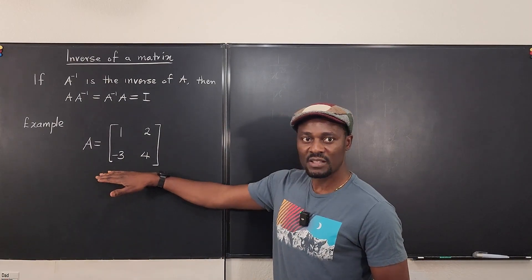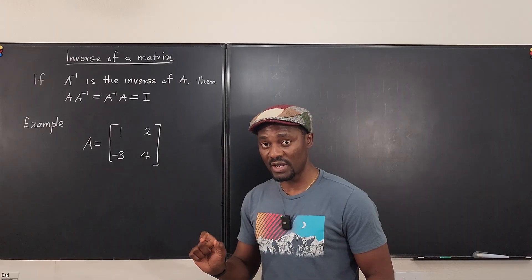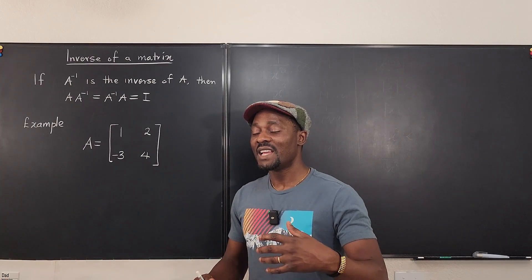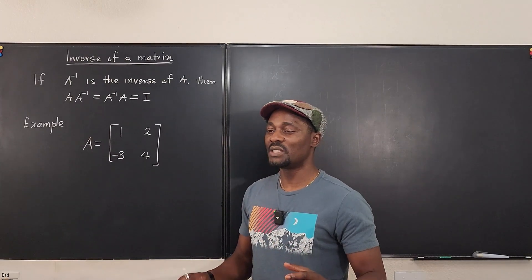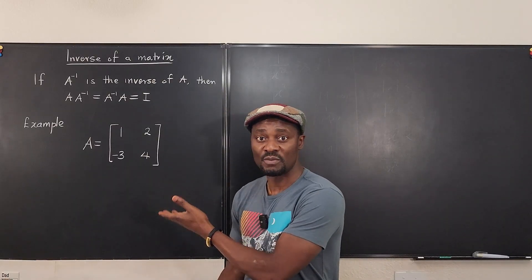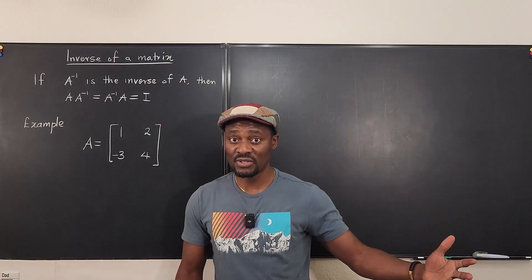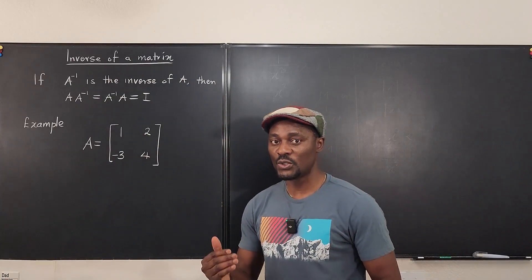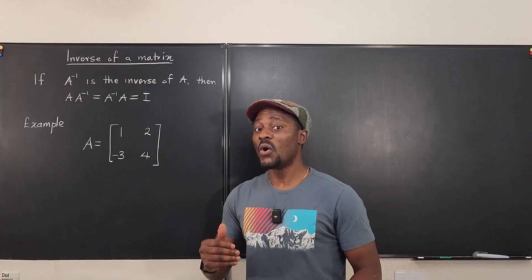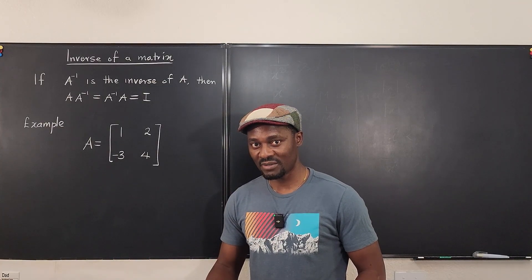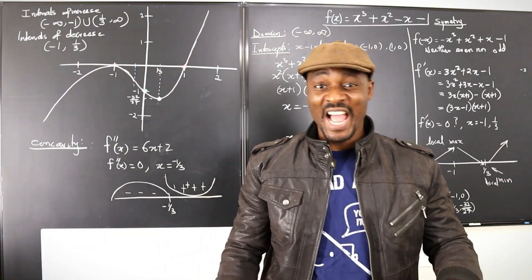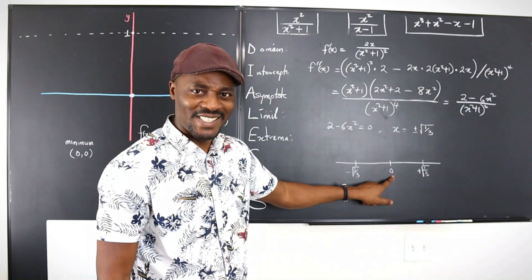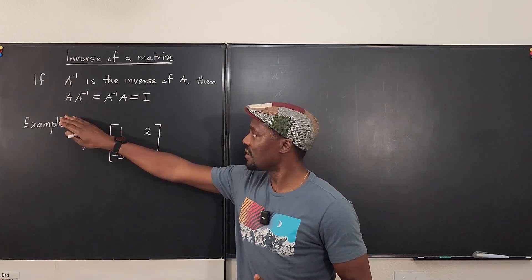I'm going to use this exercise to show you how to compute the determinant of a 2x2 matrix, and then we're going to have a formula generated from that. This formula only works for a 2x2 matrix — you cannot use it for bigger matrices like a 3x3 or 4x4. We're going to derive it from first principles.